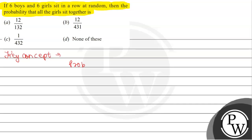Here is our key concept. Our probability is equal to favorable outcomes divided by total outcomes.